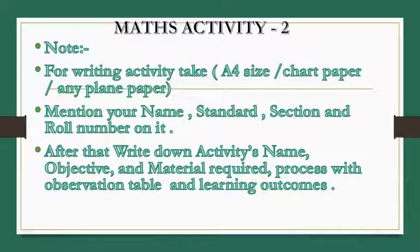Before starting the activity you have to note down some important points for writing an activity. You have to take an A4 size paper, chart paper, or any plain paper. Don't forget to mention your name, standard, section on it. After that write down activity's name, objective, and material required, then complete your activity.